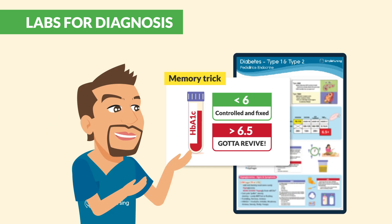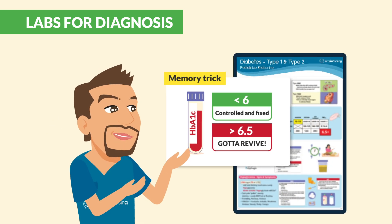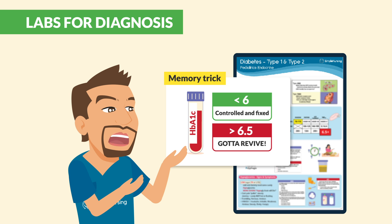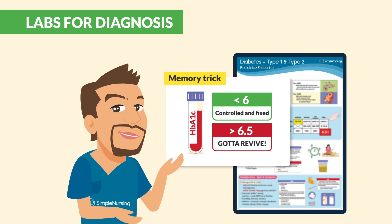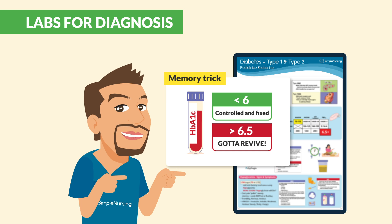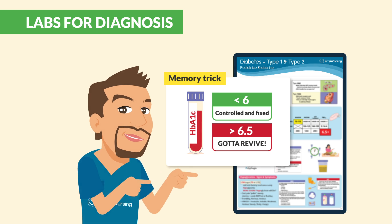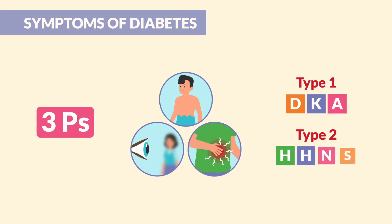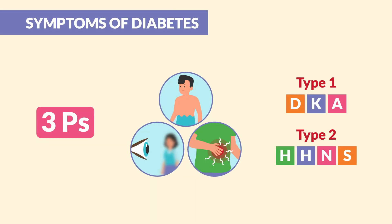A quick memory trick: hemoglobin A1c below 6 is controlled and fixed. Over 6.5, we gotta revive. These high blood sugar levels can lead to specific signs and symptoms.